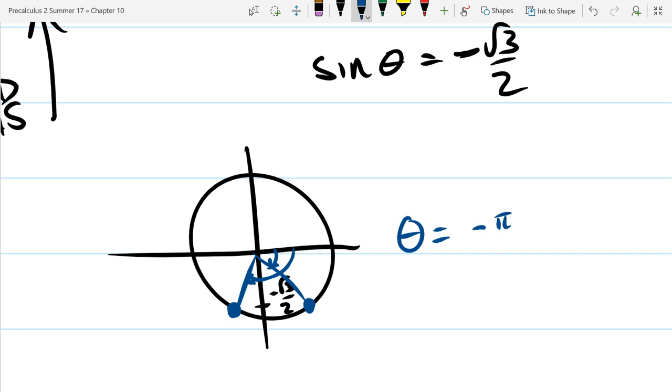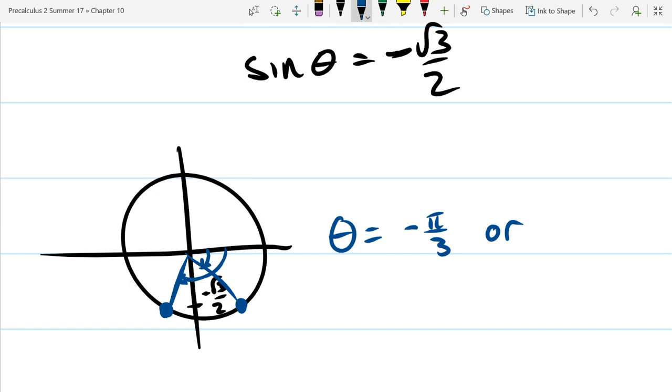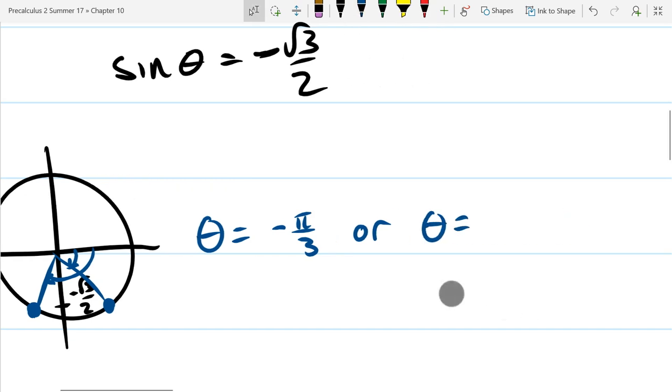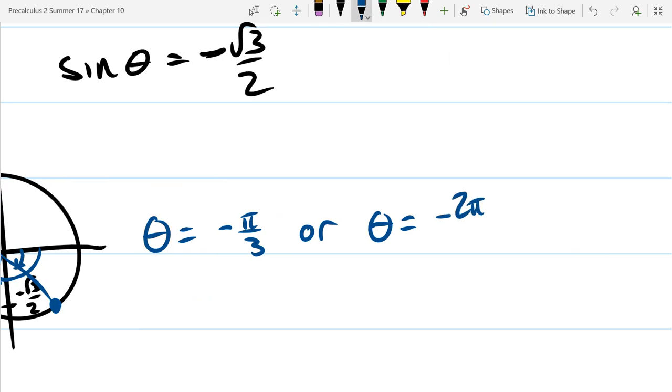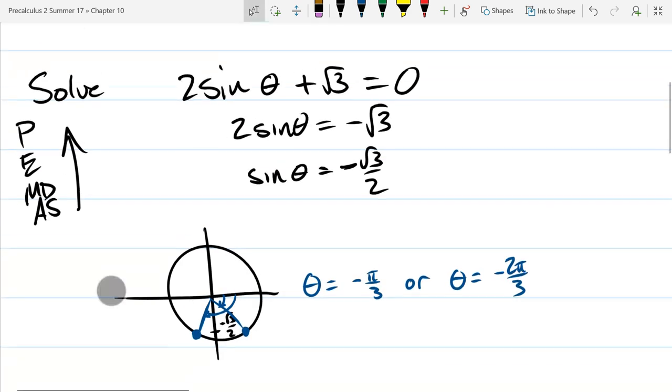Or, the other one is negative 2 pi over three. So I think it's negative pi over three or negative 2 pi over three.